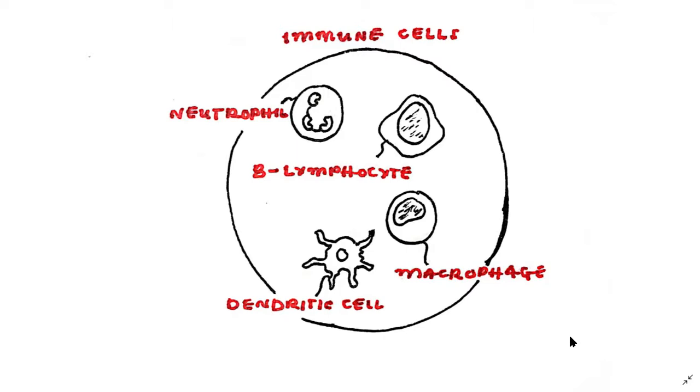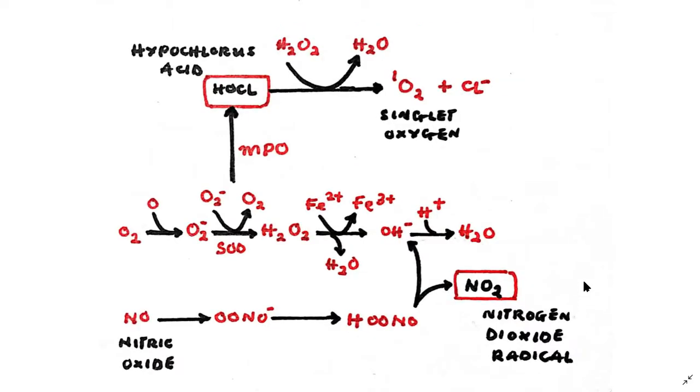Now we mentioned earlier that the phagolysosome creates an acidic environment to destroy or neutralize its contents. The immune system cells that perform phagocytosis can also use other mechanisms to destroy pathogens inside the phagolysosome, such as oxygen radicals. Now oxygen radicals are highly reactive molecules that react with proteins, lipids and other biological molecules. During physiological stress the amount of oxygen radicals in a cell can increase dramatically, causing oxidative stress which can destroy cell structures.